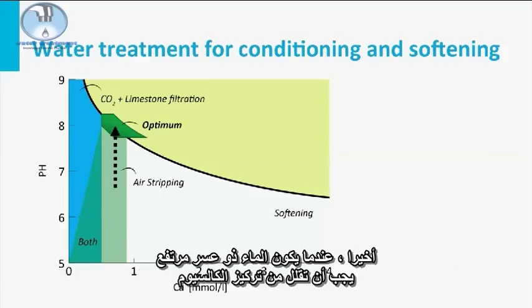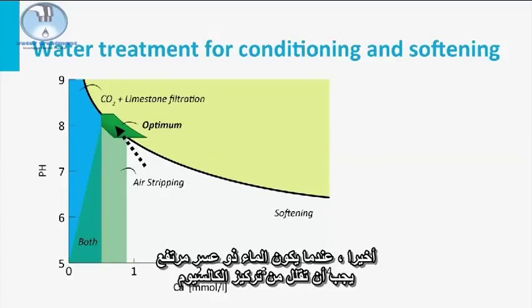Finally, when the water has a high hardness, the calcium concentration should be diminished and pH increased. In the Netherlands this is done by pellet softening.